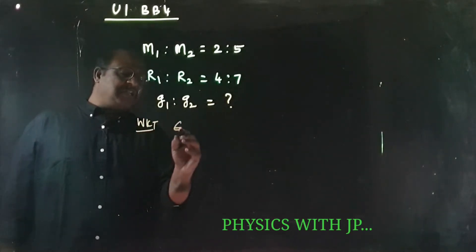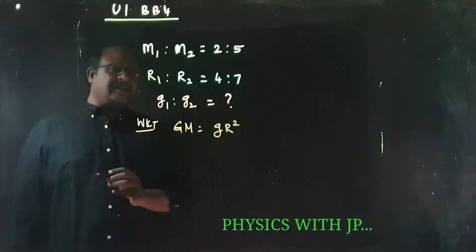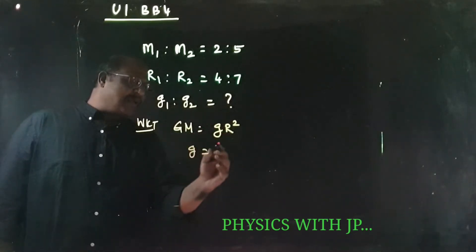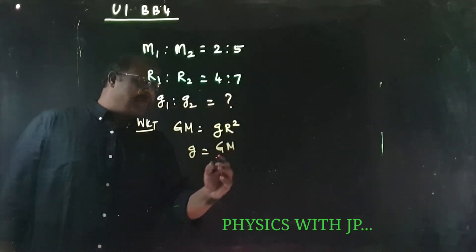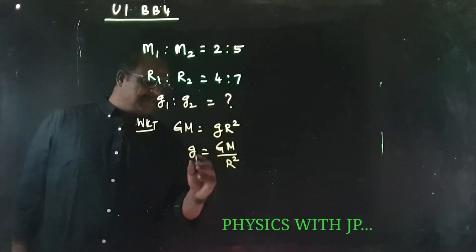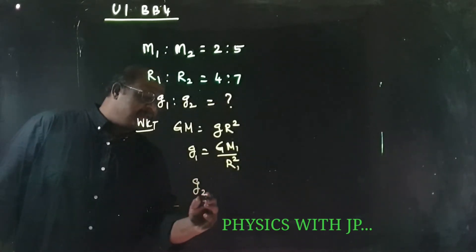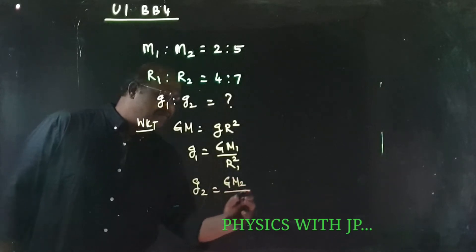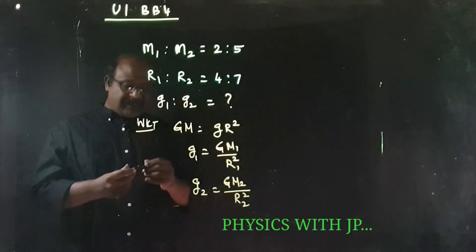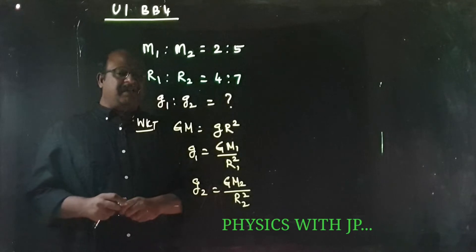We know that g is equal to GM over R². So g1 is equal to GM1 over R1², and g2 is equal to GM2 over R2². G is the gravitational constant, so it remains constant.